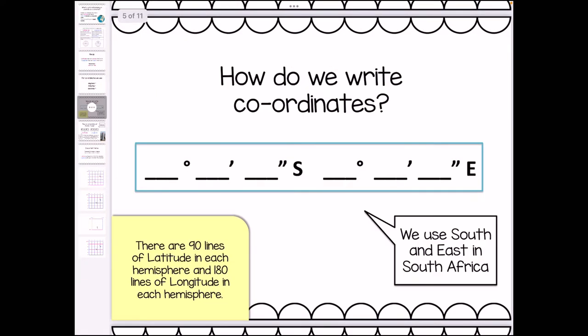We have a formula for how to write coordinates: something degrees, something minutes, something seconds south; something degrees, something minutes, something seconds east. That is the formula you use every single time you're asked to write coordinates. We only use south and east in South Africa, so because you get given South African maps in your tests, your directions will always be south and east. But for example, if you have a map of North America, your direction would be north and west, because it's north of the equator and west of the Greenwich or Prime Meridian. For South Africa, you will always use south and east.